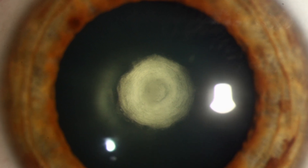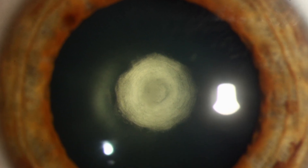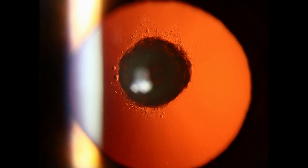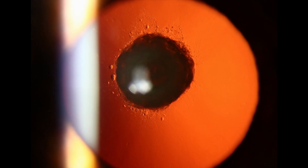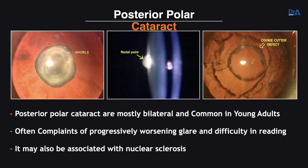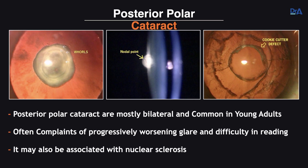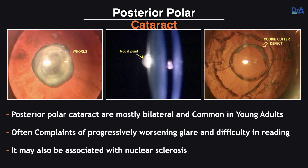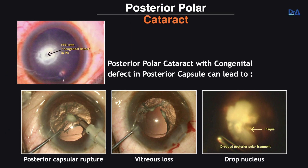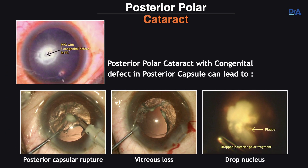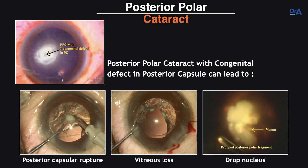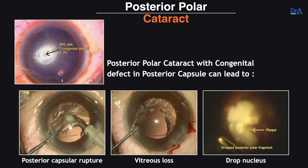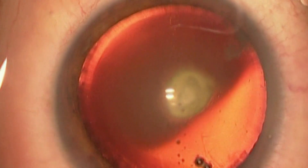Posterior polar cataracts are unique. They could either be adherent to the posterior capsule or have a pre-existing posterior capsular defect, thereby carrying a high risk of intraoperative posterior capsular rupture and vitreous loss. In this video we are going to show you the do's and don'ts of managing a PPC.